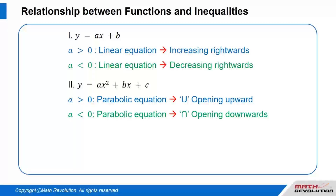Case 2: y equals a times x squared plus b times x plus c. When a is positive (a is greater than 0), the parabolic equation will result in a U-shape — a parabola opening upward.